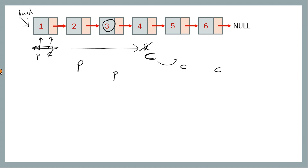We also need to handle the edge case where k is more than the number of nodes in the list. In that case we return a dummy value of minus one, otherwise we return the actual value. Let's write the code for this.